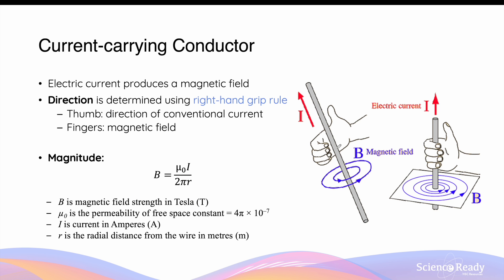In a straight current-carrying conductor, such as a rod or a straight wire, the magnetic field produced by the currents, or moving charges through the conductor, is circular and goes around the conductor as you can see in the diagram. The direction of this magnetic field in relation to the current is determined by using an important rule called the right-hand grip rule, or simply the right-hand rule.